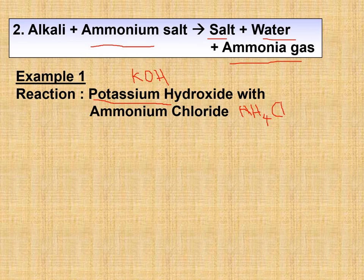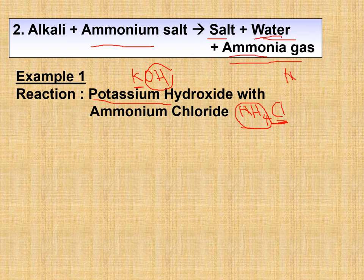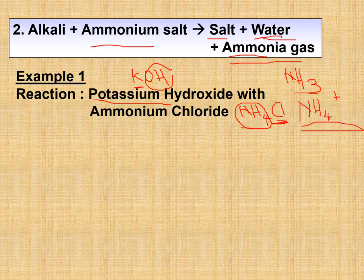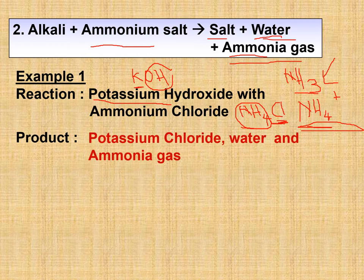K⁺ combines with Cl⁻ to give potassium chloride. The remaining ammonium ion (NH₄⁺) and hydroxide ion (OH⁻) combine to produce water and ammonia gas (NH₃). Note the difference: ammonia is NH₃ — a gas molecule — while ammonium is NH₄⁺ — an ion. The three products are potassium chloride, water, and ammonia gas.